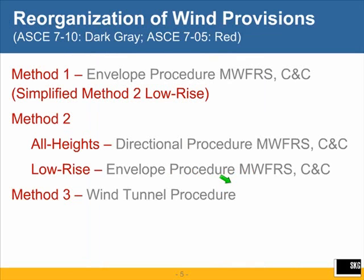ASCE 7-10 wind design is quite different in many respects from ASCE 7-05, which most of you would be more familiar with. For one thing, wind provisions were in chapter 6 of ASCE 7-05, whereas there are multiple chapters in the back of the book in ASCE 7-10 — the wind chapters are 26 through 31. In 2005 we had method 1, method 2, and method 3.